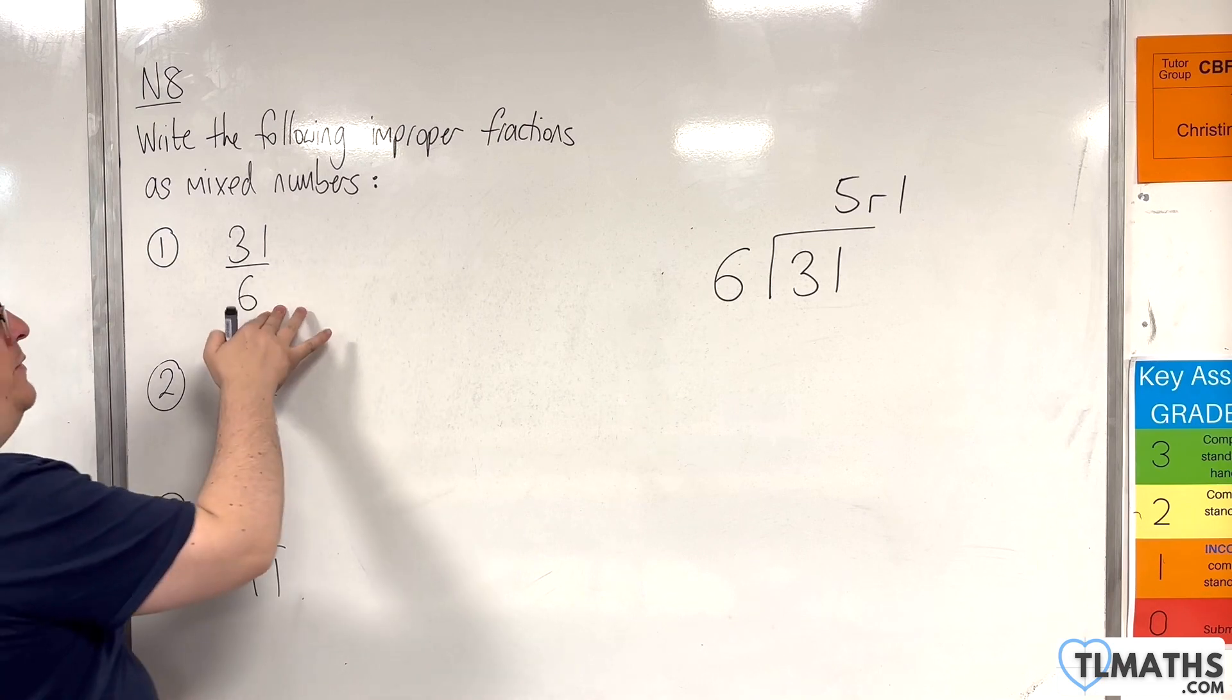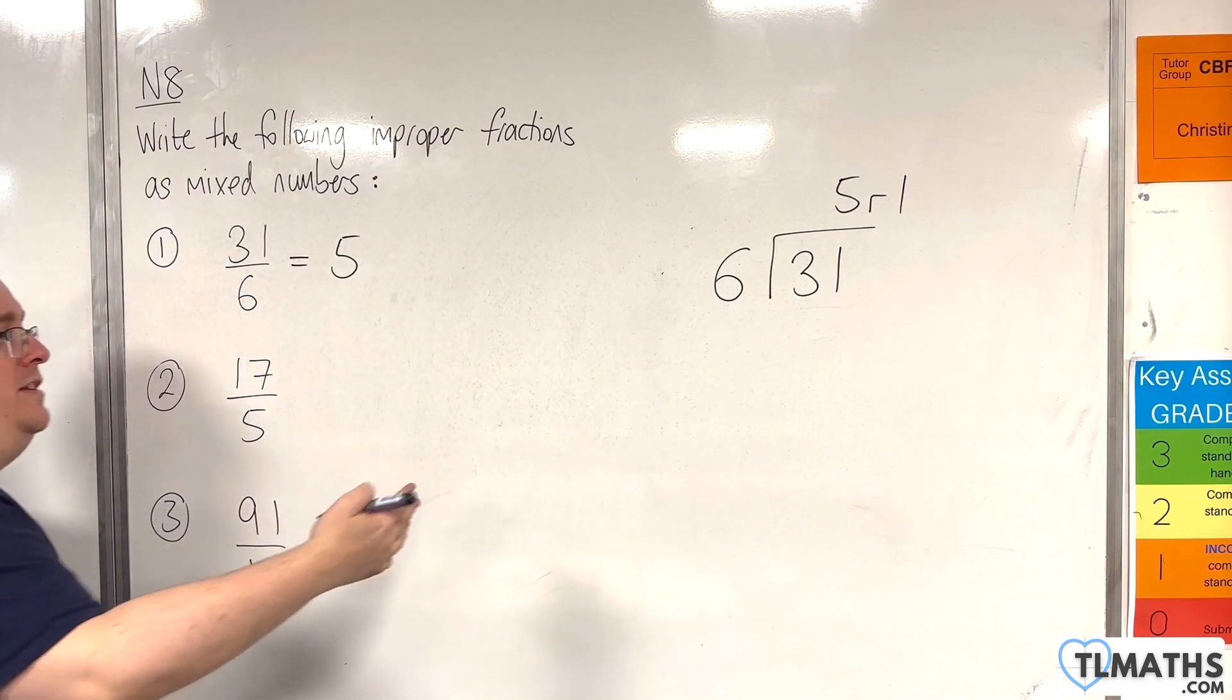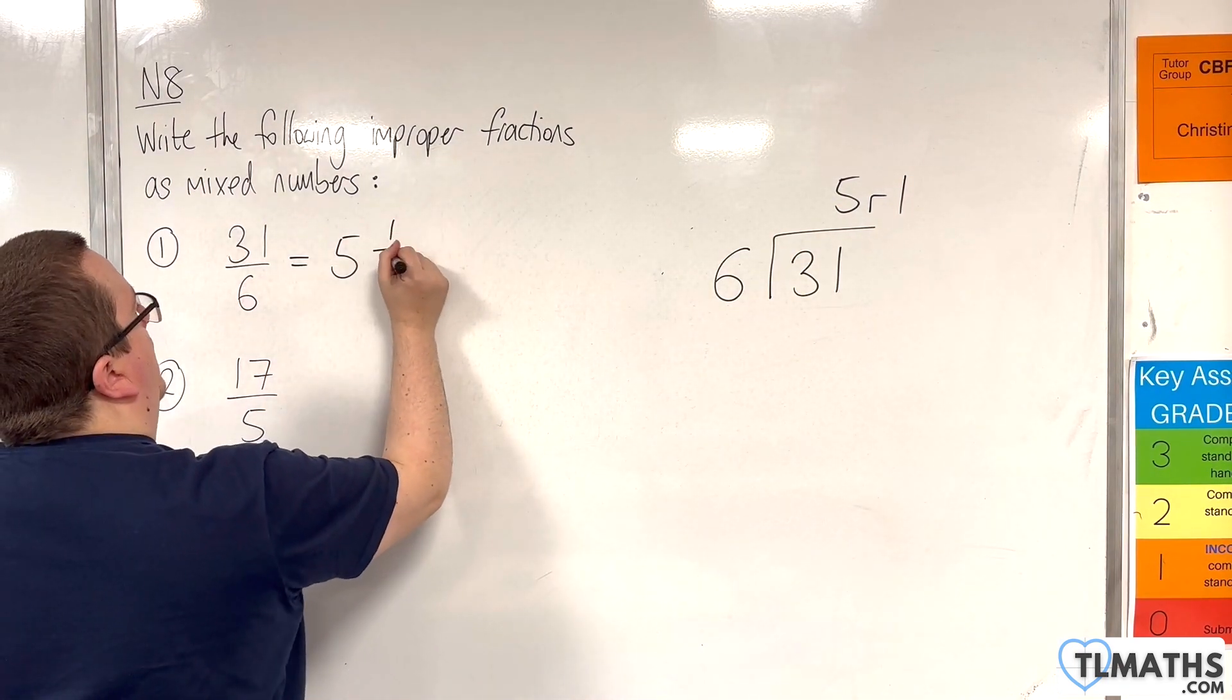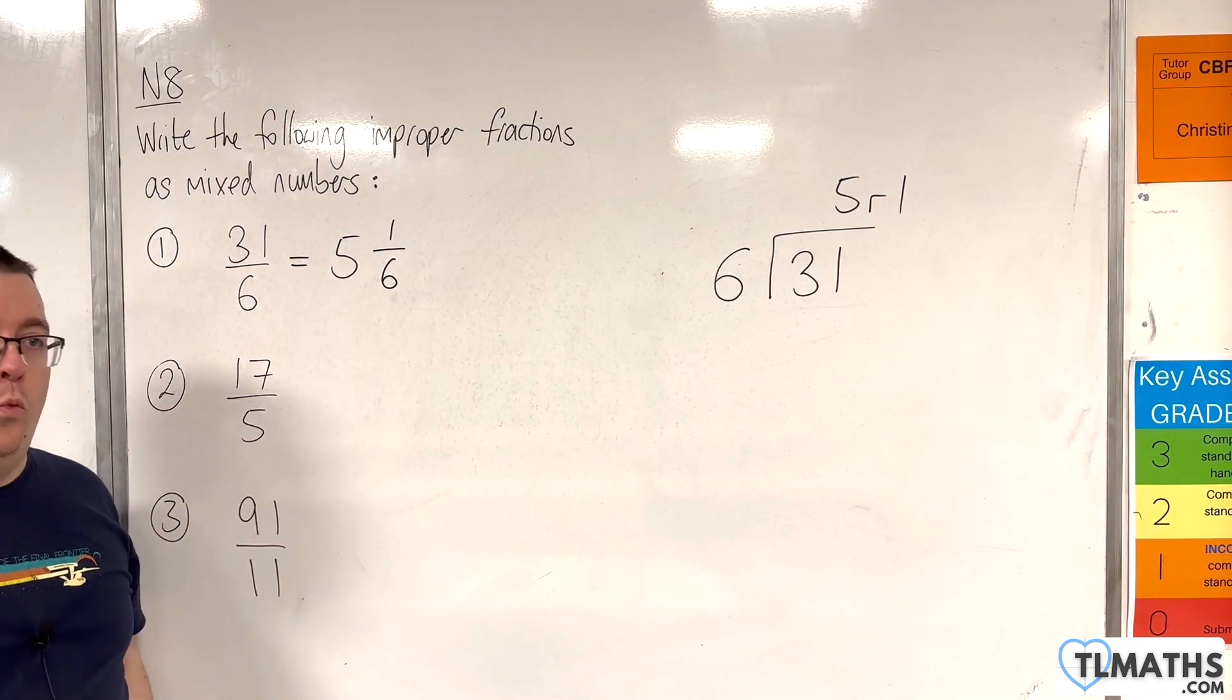So, 31 over 6 will be 5 units, essentially. It goes in 5 times, but there's 1 left over. So, 1 over 6. So, 31 over 6 is 5 and 1 sixth.